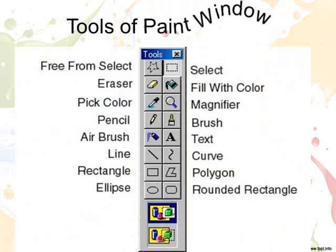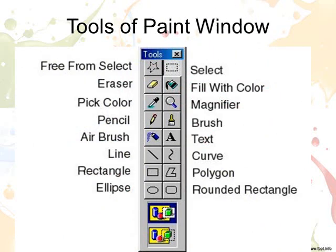The tool group has many tools that have different functions. These tools help us in making drawings. To use any tool in the tools group, simply click on it. The tool will be selected. Let us see the different tools we use in Paint.